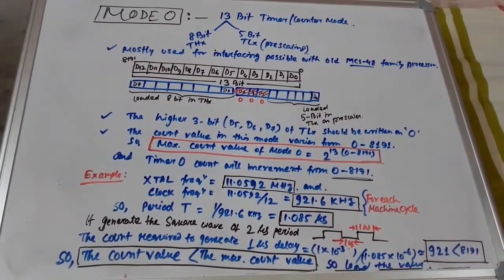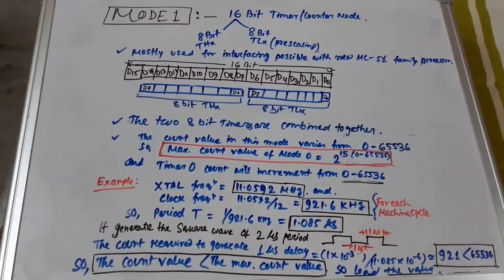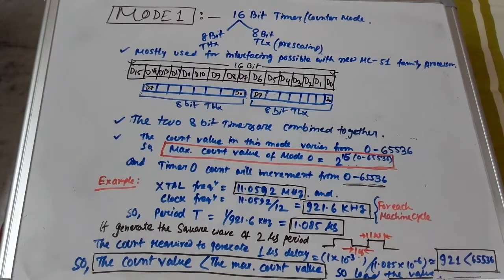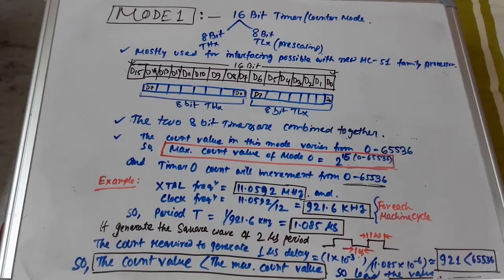Timer/counter Mode 1 is a 16-bit timer/counter mode, where the two 8-bit registers THX and TLX are combined to form a 16-bit timer. The maximum count value is 2^16 = 65536 (ranging from 0 to 65535). The count value of 921 satisfies the condition of being less than 65536 and can be loaded into the timer. This mode is similar to Mode 0 but removes the 3 masking bits of TLX, using the full 8 bits.